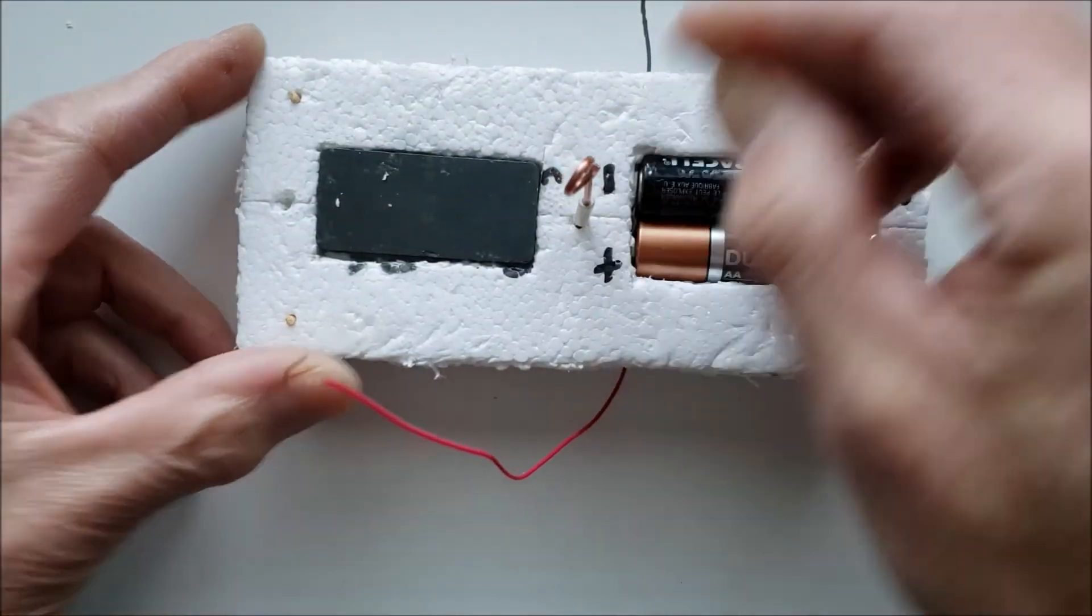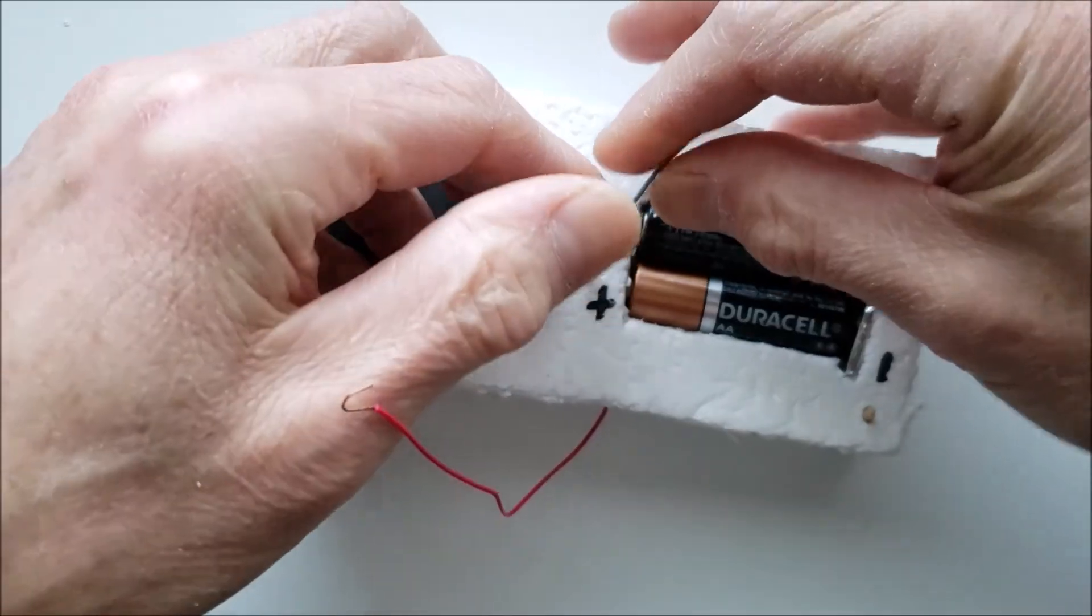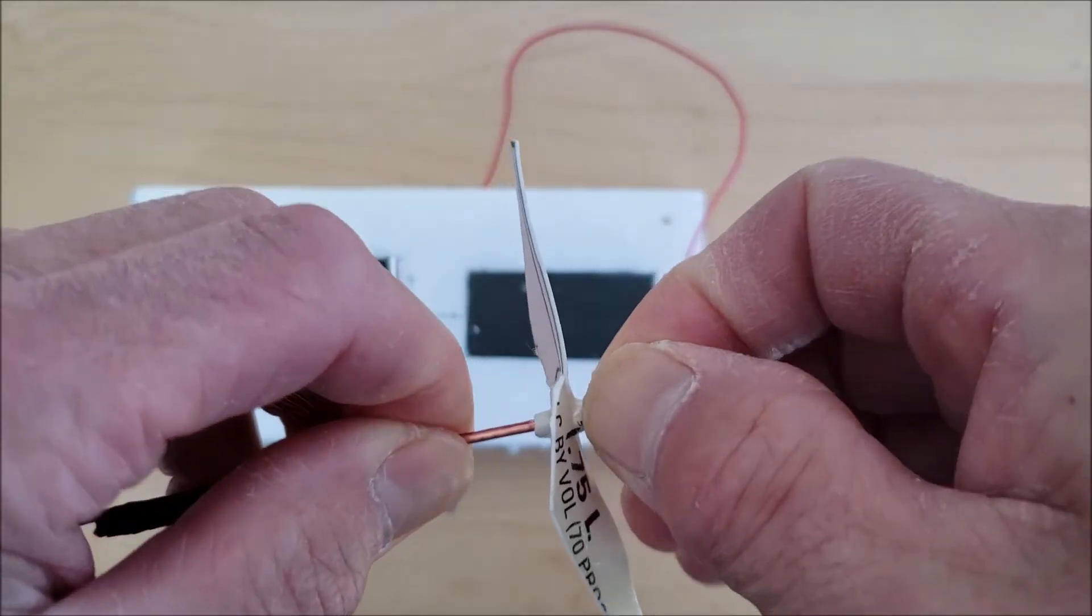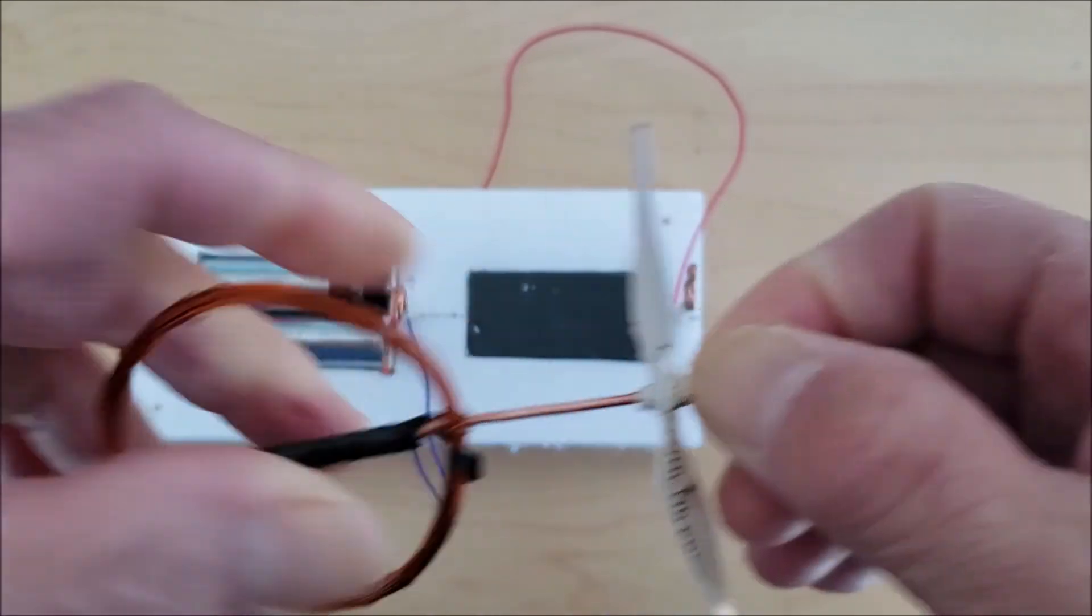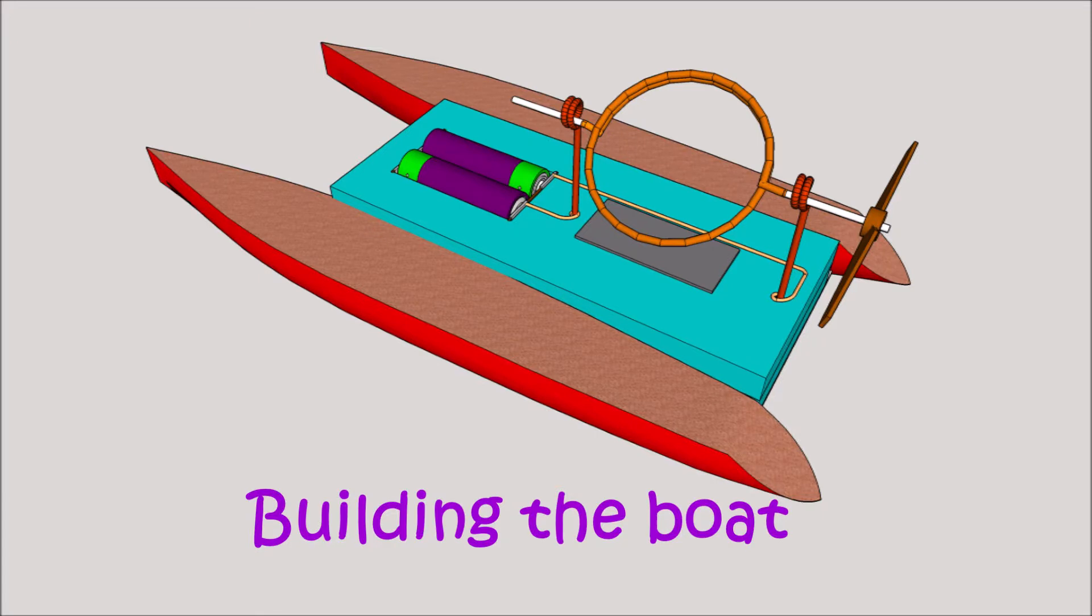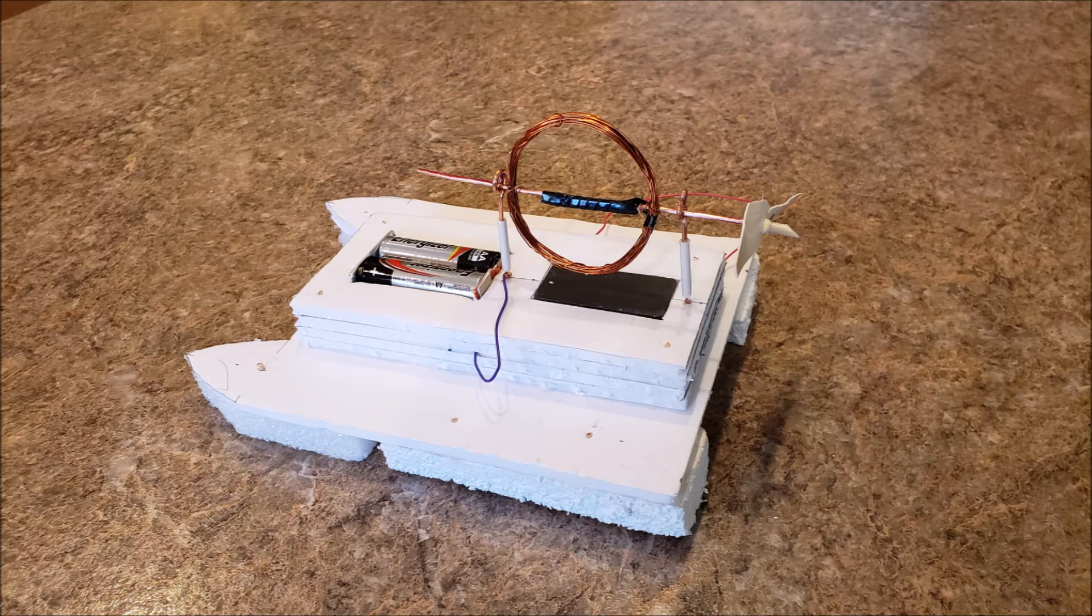Install the posts and connect the battery wires. Install the propeller on the shaft, then slide the assembly into the post loops.